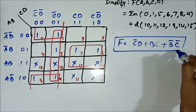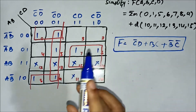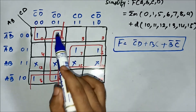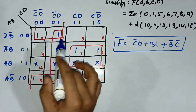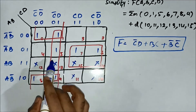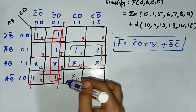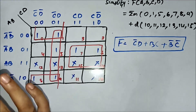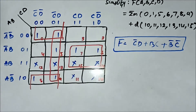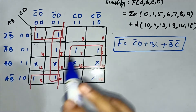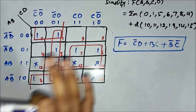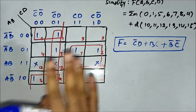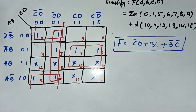The important point to remember is that once all the one-marked cells are grouped, if extra X-marked cells are left behind, there is no need to form extra groups to accommodate them — simply leave them as they are.